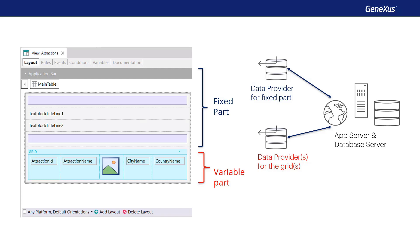In the example, we see elements in the fixed part of the panel and a grid, so the base tables of the fixed part and the variable part will be determined separately. It may happen that the fixed part has a base table and the grid doesn't, that the grid has a base table and the fixed part doesn't, that both parts have a base table, or that neither part has a base table.